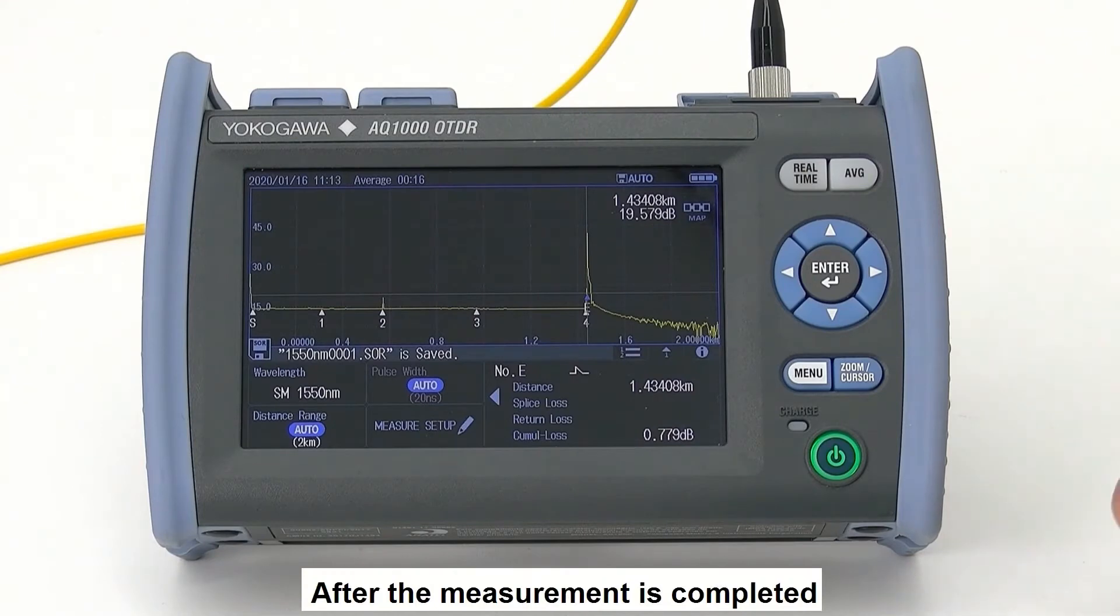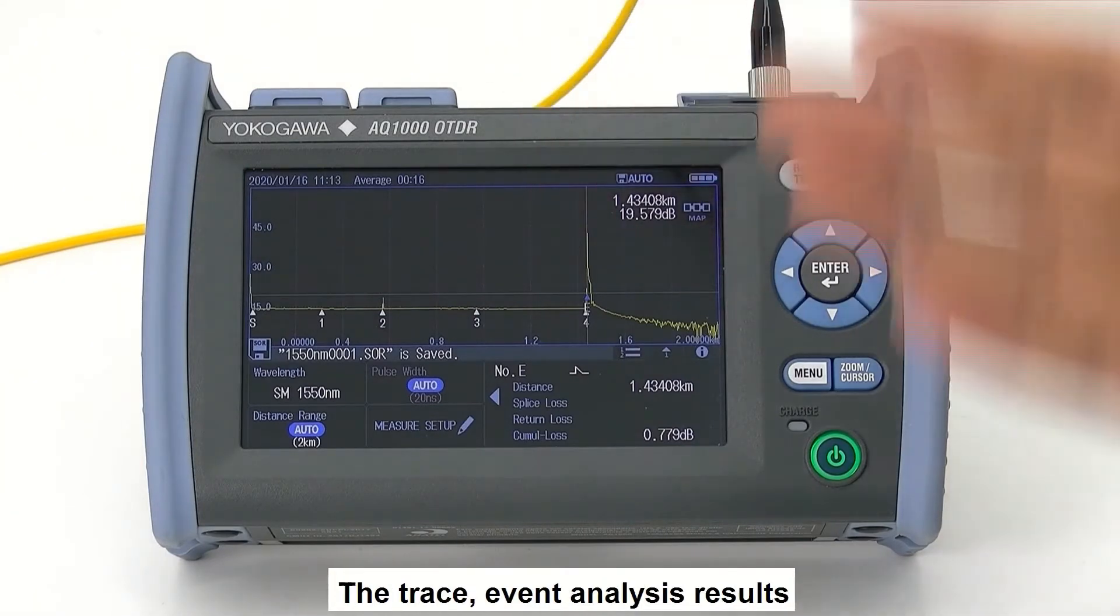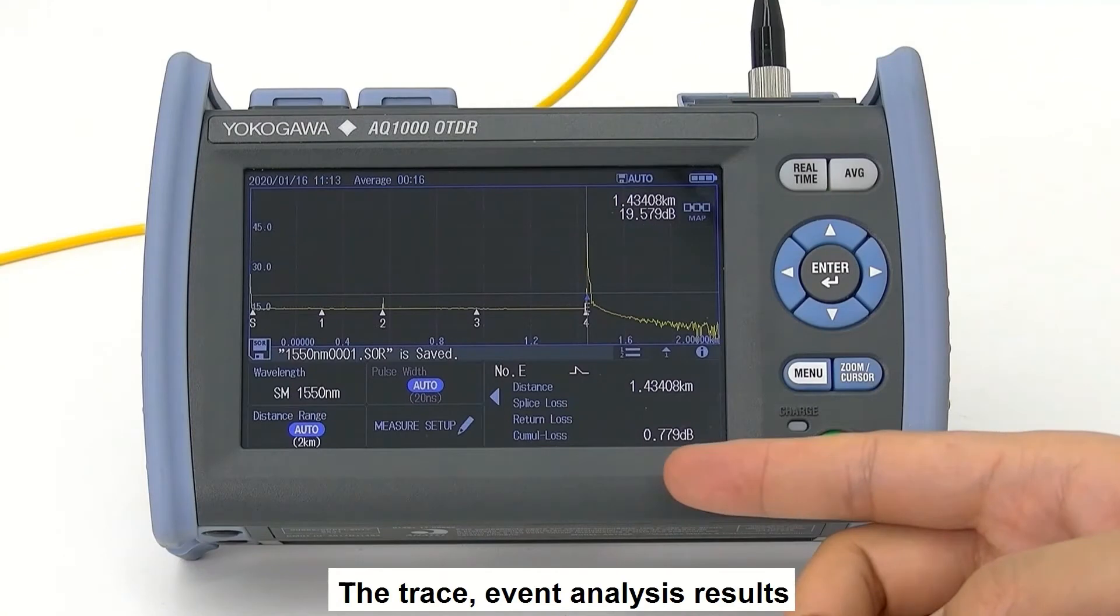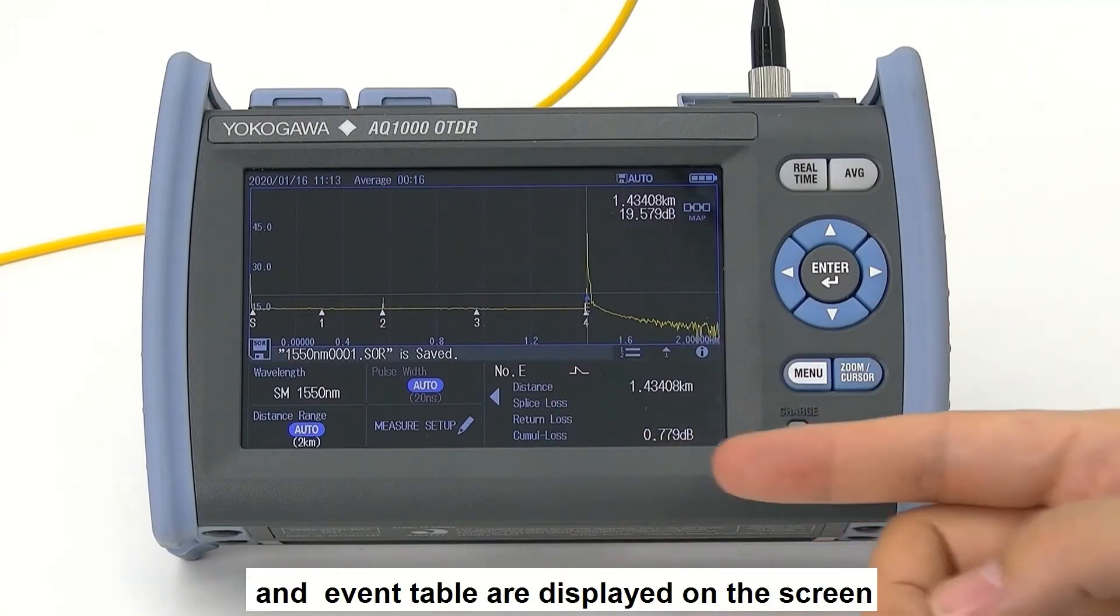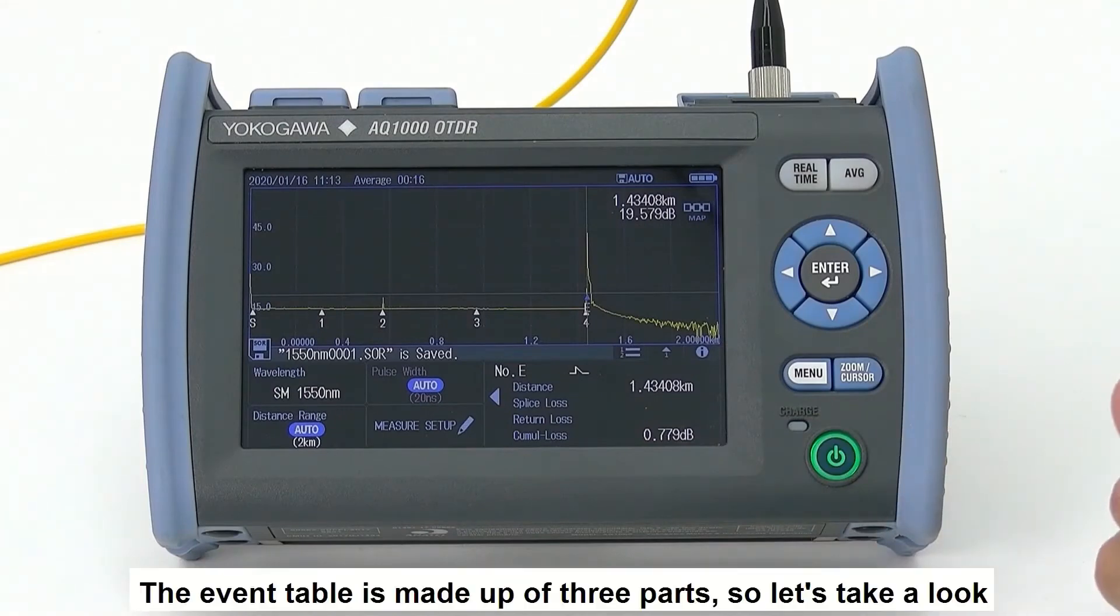After the measurement is completed, the trace event analysis result and the event table are displayed on the screen. The event table is made up of three parts.